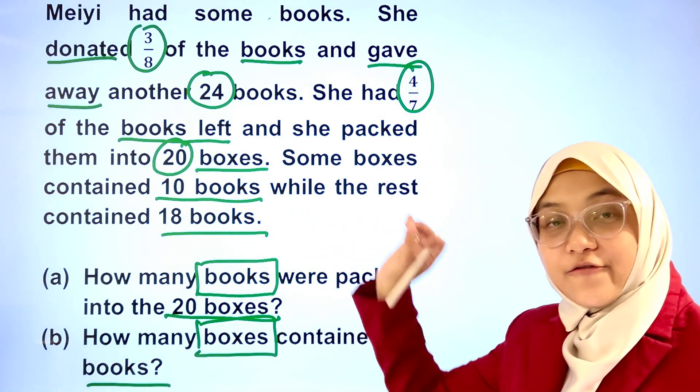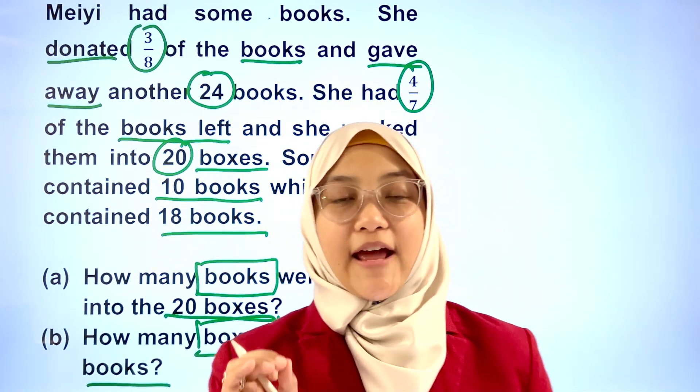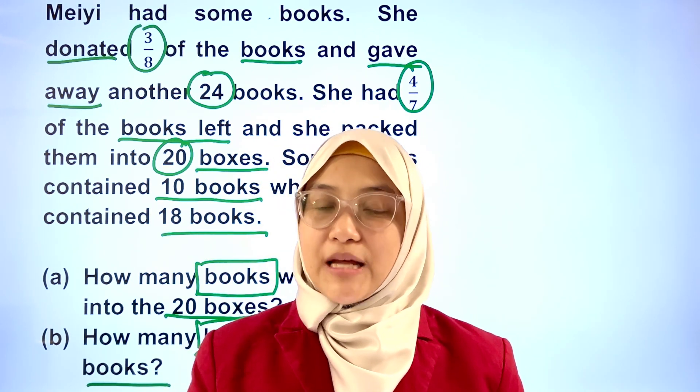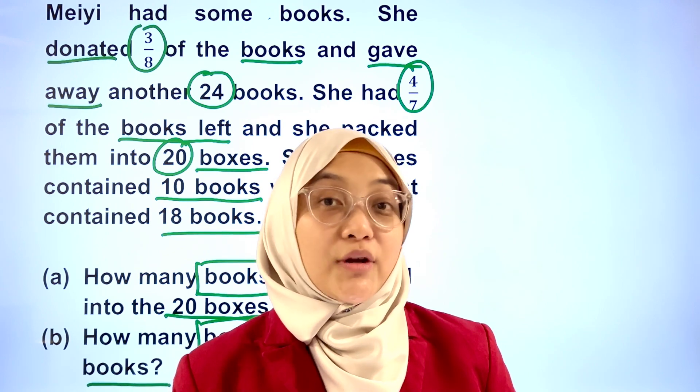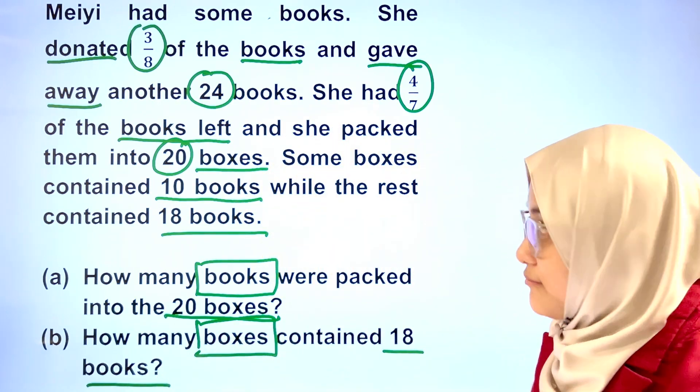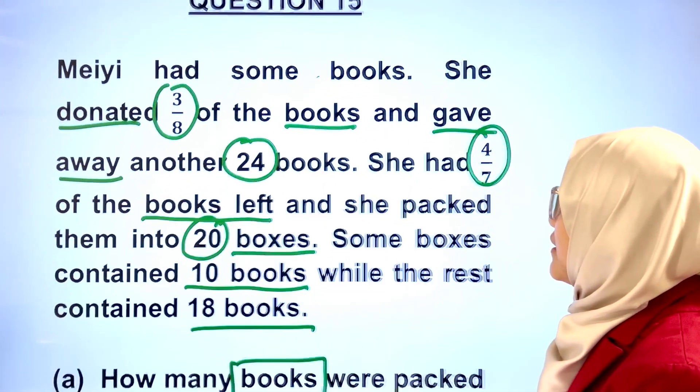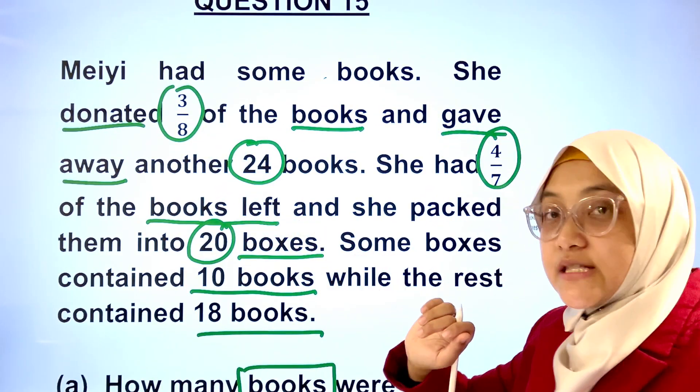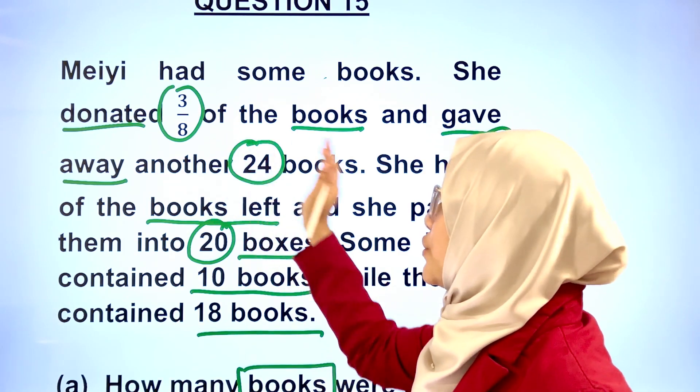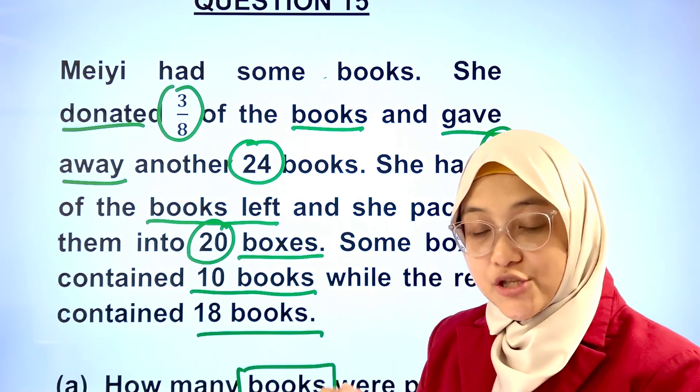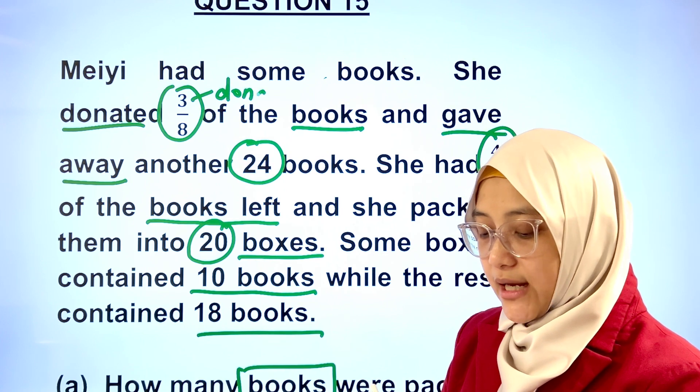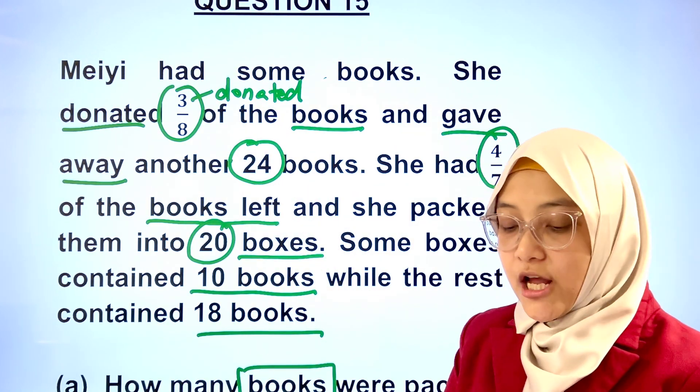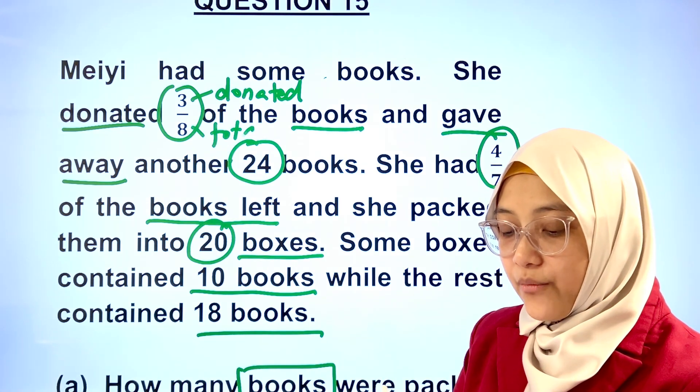This question is testing on fraction. Students, whenever you see fractions, you need to ask yourself, what does each number represent? Let's take a look at the first fraction. The first fraction, 3 out of 8, refers to the books that she donated. 3 units represent books that were donated, while 8 units represent total units of books.